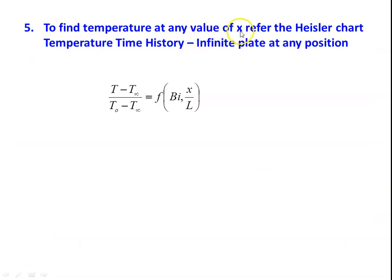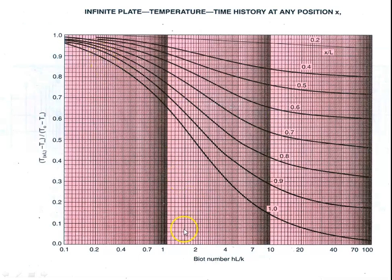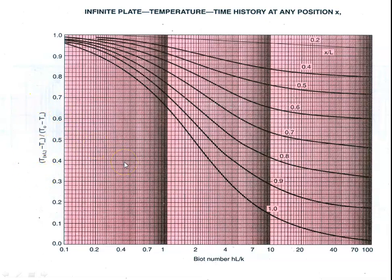To find the temperature at any value of x, refer to the second Heisler chart for temperature distribution at any position in an infinite plate. Here: (T − T∞)/(T_O − T∞) is a function of Biot number and x/L. The x-axis is Biot number from 0.1 to 100, and the y-axis is the temperature ratio. Lines are drawn for x/L ratios of 0.2, 0.4, 0.5, 0.6, 0.7, 0.8, and 1. x/L equal to 1 means the outer surface of the plate. Using this graph, you can find the surface temperature or temperature for any given value of x.